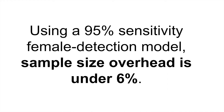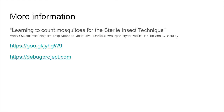Under plausible dynamics parameters, and with an achievable 95% female detection sensitivity, we find that the system's sampling overhead is below 6% compared to sample sizes required by a perfect counting system.